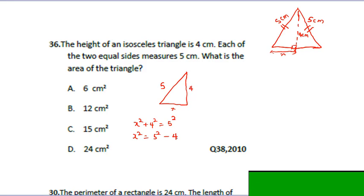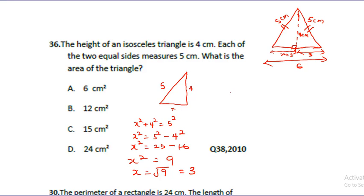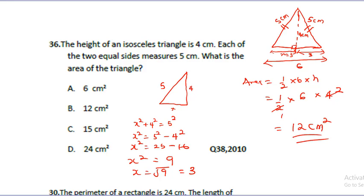Applying Pythagoras: x squared plus 4 squared equals 5 squared, so x squared equals 25 minus 16, which is 9. Therefore x equals the square root of 9, which is 3. The height is 3 cm, and the total base is 6 cm (since the other half is also 3). The area equals half times base times height: half times 6 times 4 equals 12 cm squared.